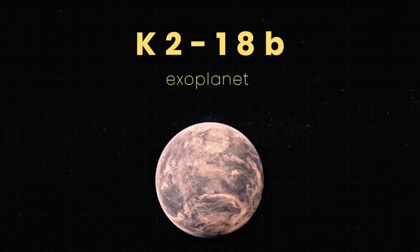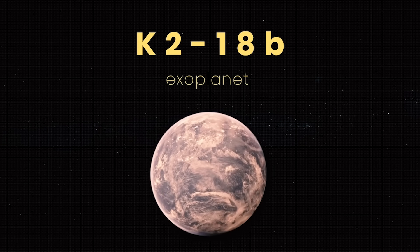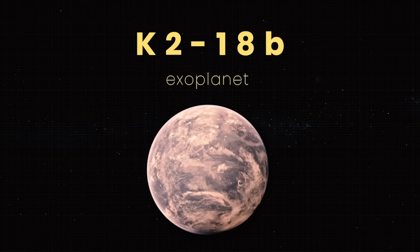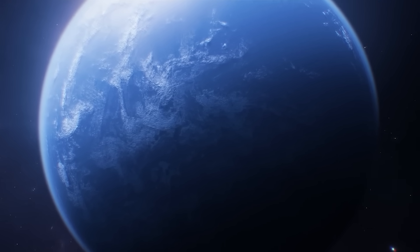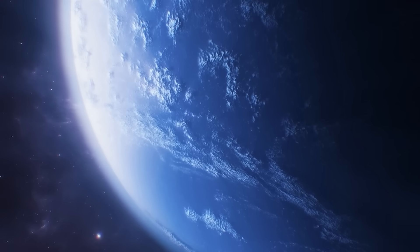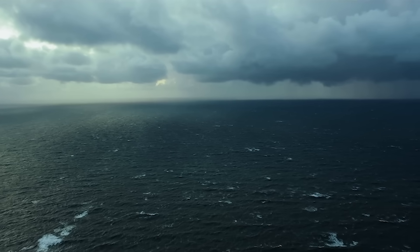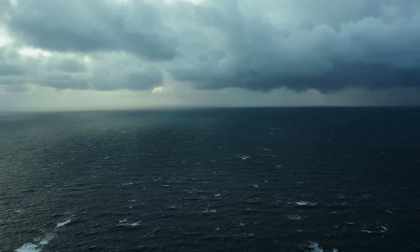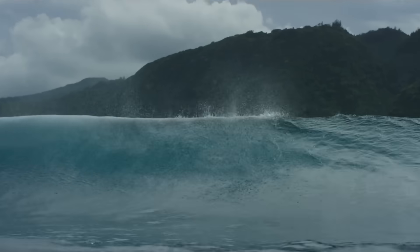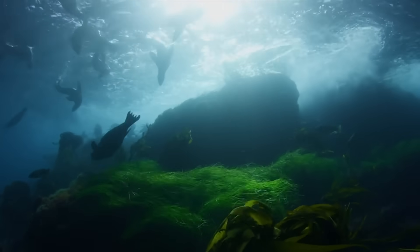A groundbreaking discovery added to this potential as researchers identified the exoplanet K218b, situated around 120 light-years from our solar system. This Heishin world, characterized by a hydrogen-rich atmosphere and a liquid-water ocean, displayed intriguing features.